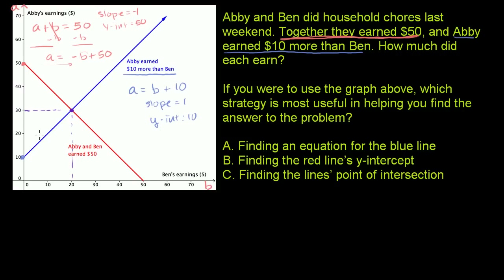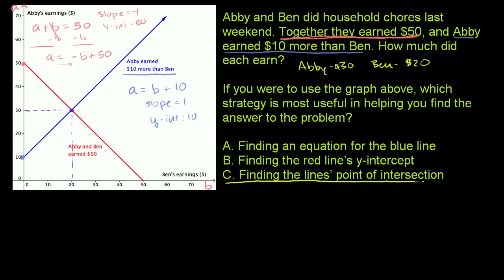That makes sense: 30 plus 20 is $50, so we meet the first constraint. And Abby at $30 made $10 more than Ben who only made $20. So Abby earned $30 and Ben earned $20. Answering the second meta-level question — which is the best strategy — we had to find the points of intersection, so that is choice C. Finding these other things really wouldn't have helped us solve the problem.